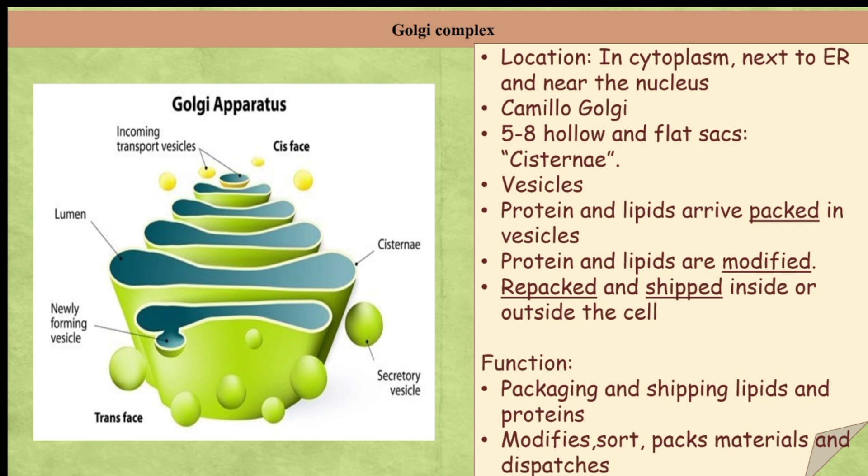How does the Golgi complex function? First, proteins and lipids arrive packed in vesicles. Then they are modified, and finally they are repacked and shipped wherever required — either inside or outside the cell. Hence it is also known as the traffic system of the cell.